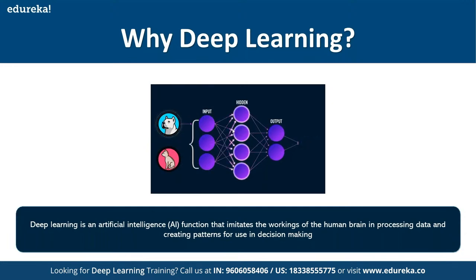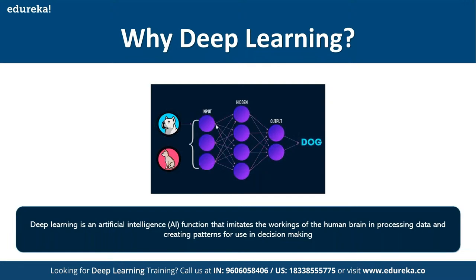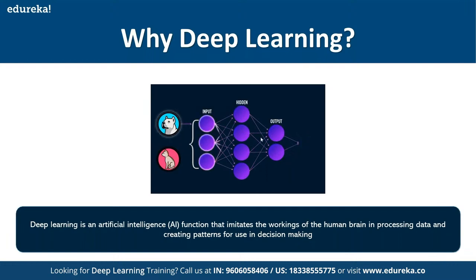The connections or arrows represent the connections between the respective layers. The individual component you see is called a neuron. If I have a connection between one neuron from the previous layer to every other neuron in the next layer, then we call this network a dense network.